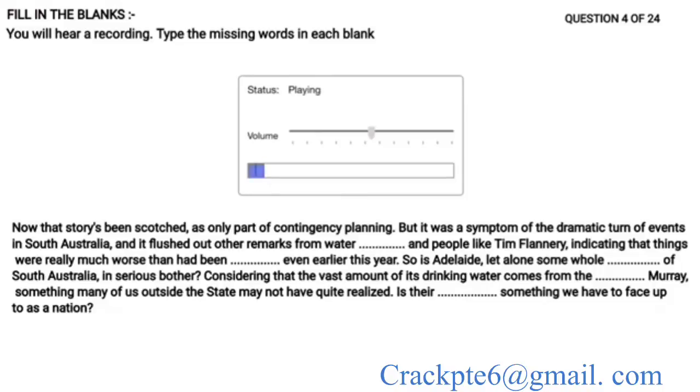Now that story has been scotched as only part of contingency planning, but it was a symptom of the dramatic turn of events in South Australia, and it flushed out other remarks from water academics and people like Tim Flannery, indicating that things were really much worse than had been foreshadowed even earlier this year. So is Adelaide, let alone some whole regions of South Australia, in serious bother? Considering that the vast amount of its drinking water comes from the beleaguered Murray, something many of us outside the state may not have quite realized. Is there a predicament something we have to face up to as a nation?